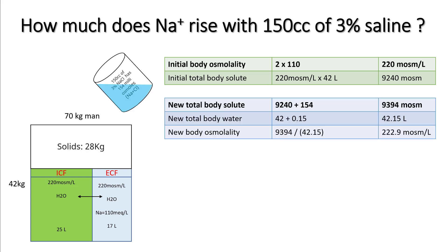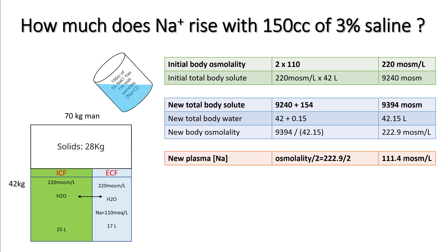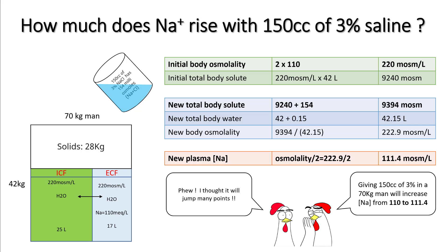Now let's add 150 cc of 3% saline. It has around 154 milliosmoles of sodium and chloride ions. New total body solute is 9240 + 154, and new total body water is 42 + 0.15 liters. Dividing these gives a new body osmolality of 222.9. Since sodium is half your total osmolality, that's 222.9 ÷ 2 = 111.4. So giving 150 cc's of 3% saline in a 70 kg man increases sodium only from 110 to 111.